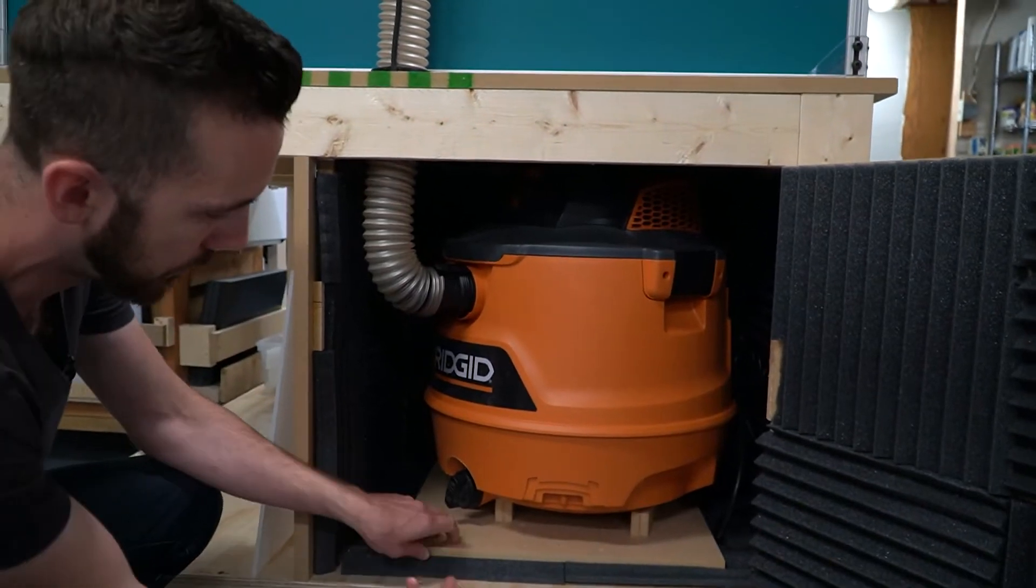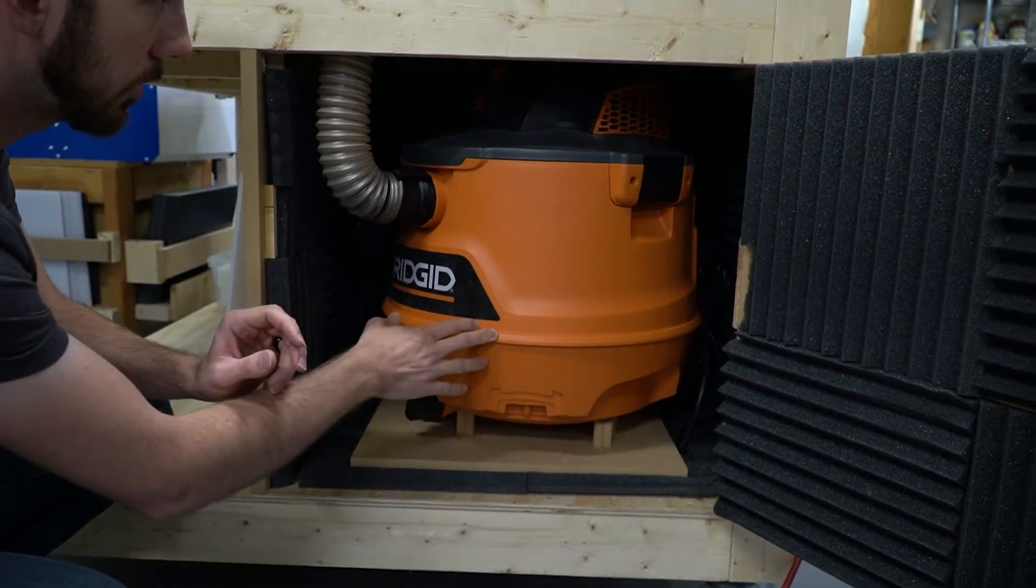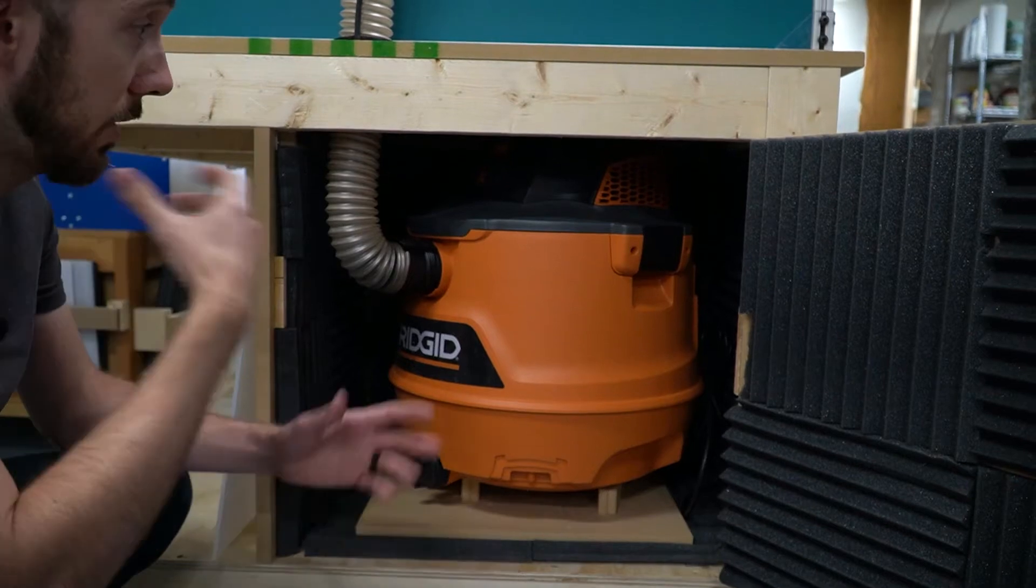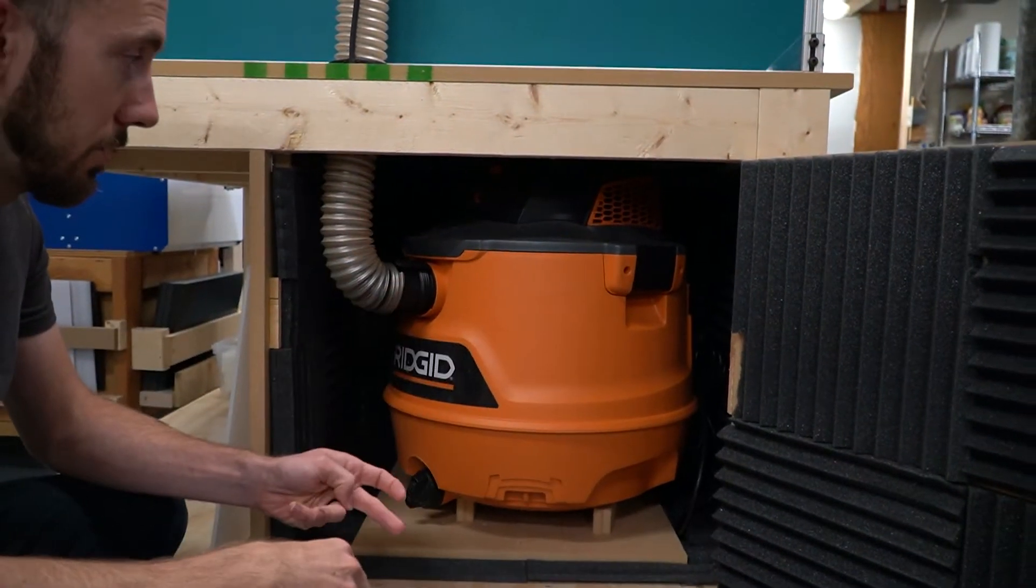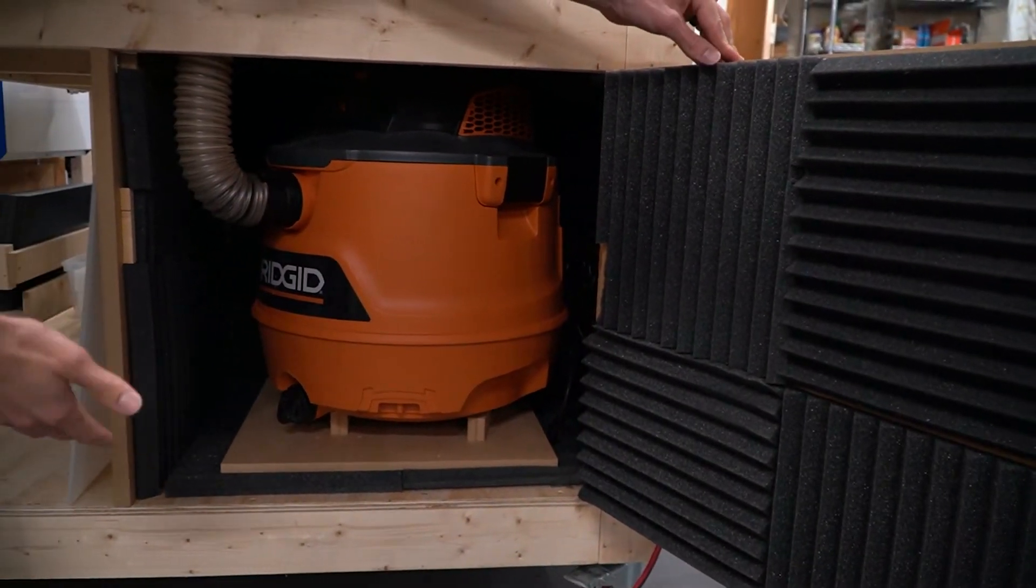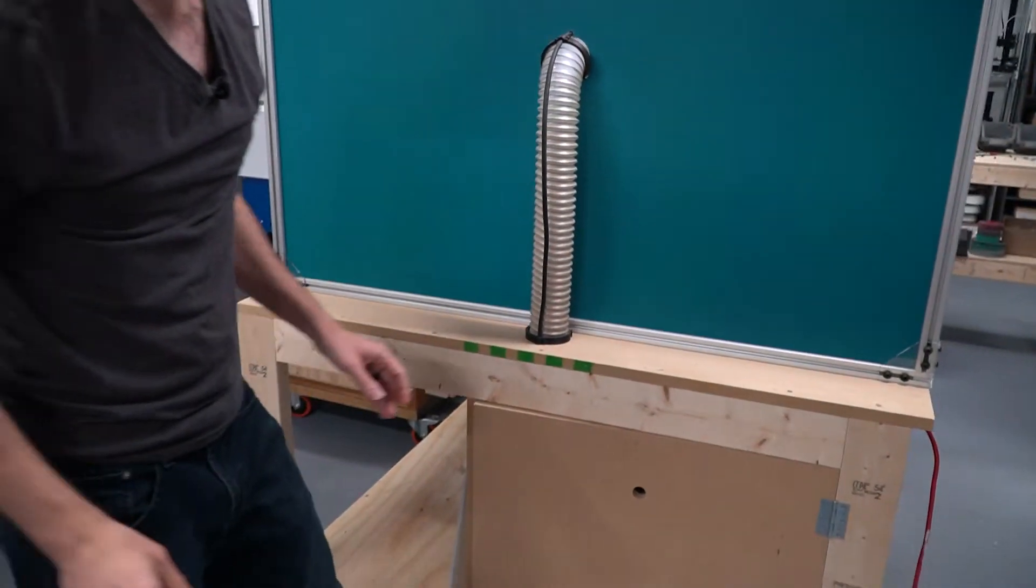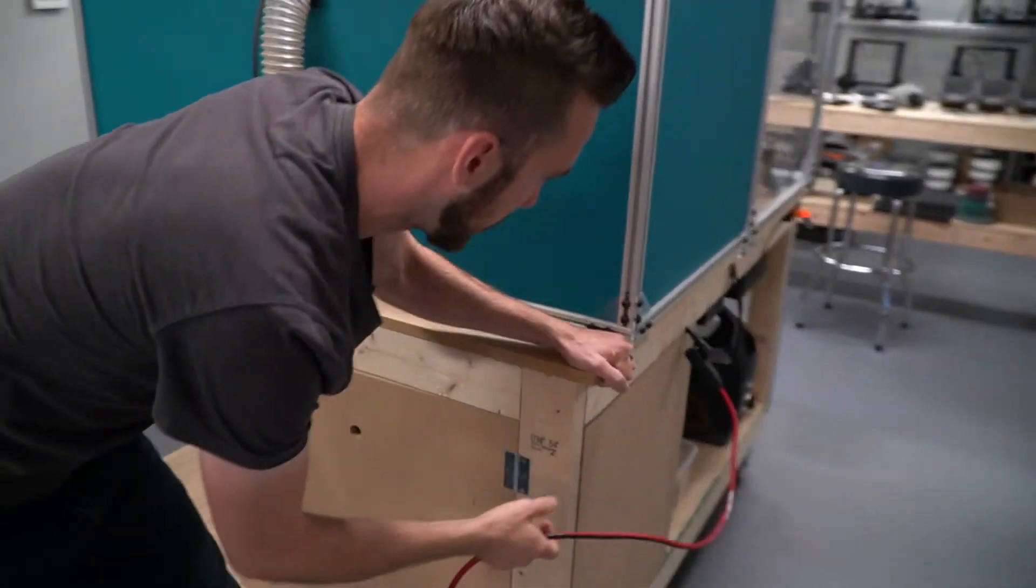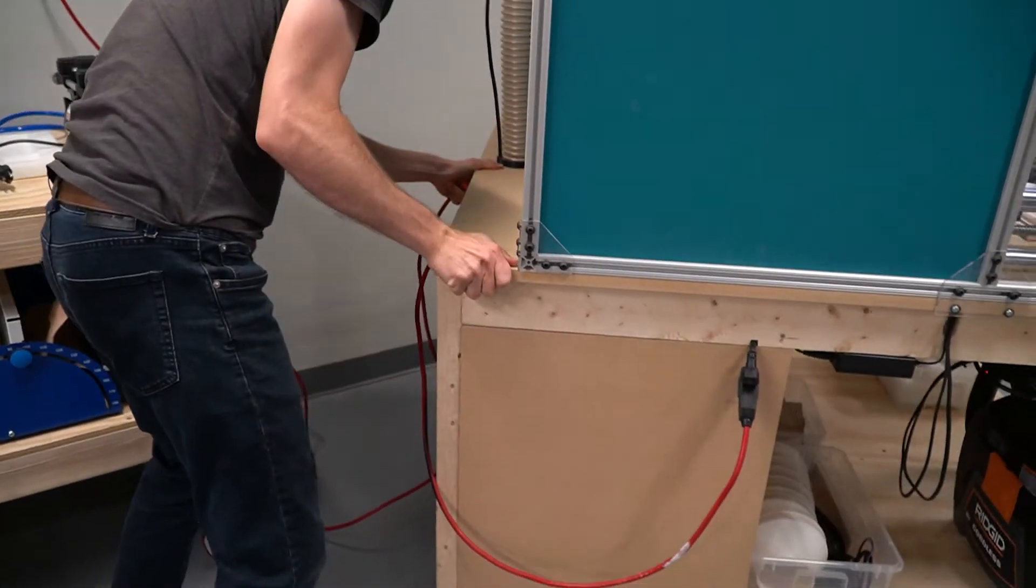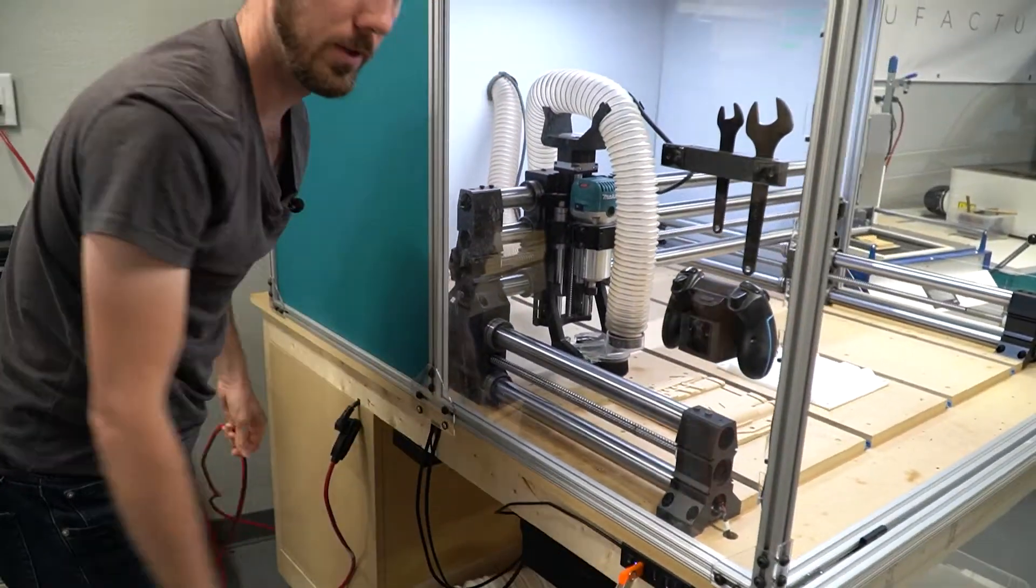I do have a whole bunch of holes punched in here underneath so that the vacuum can breathe a little bit and a few on the backside too. So it doesn't get too hot, but that works out really nice. And the vacuum is really quiet now. This is just, I think it's a six peak horsepower, 99 bucks from Home Depot. So that works out pretty well. Try and put this back.